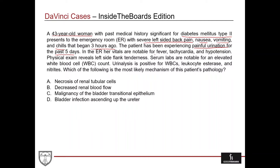In the ER, her vitals are notable for fever, tachycardia, and hypotension — relatively concerning. She has a fever with these symptoms, meaning she may have some type of systemic infection, and then you throw in that she's tachycardic and hypotensive, so your signals go up for whether this patient is in sepsis. Physical exam reveals left-sided flank tenderness, confirming what she's been complaining of. Her serum labs are notable for an elevated white count, further confirming an inflammatory process, likely an infection. Her urinalysis is positive for white blood cells, leukocyte esterase, and nitrites.